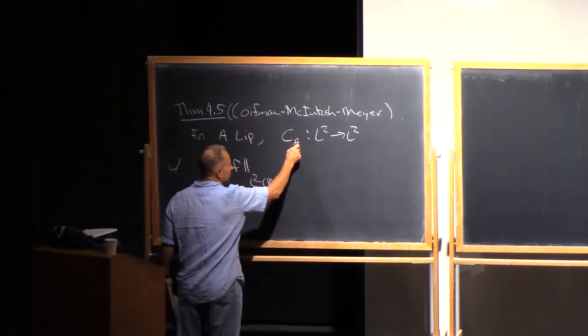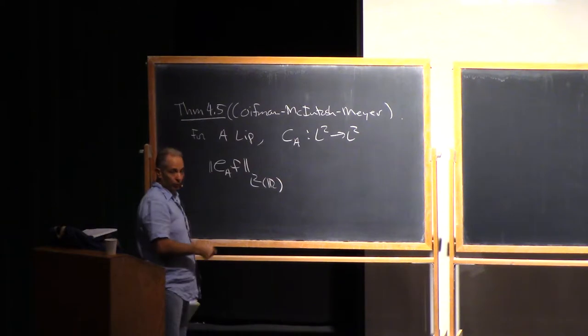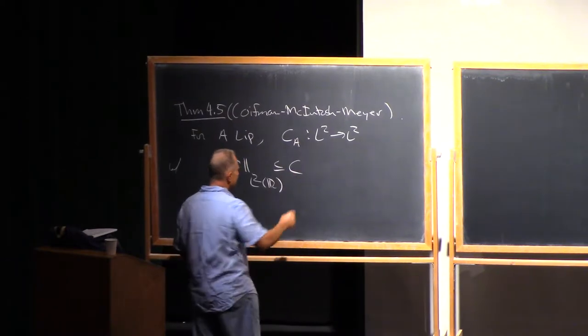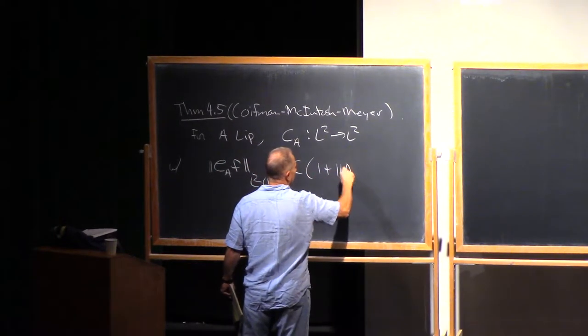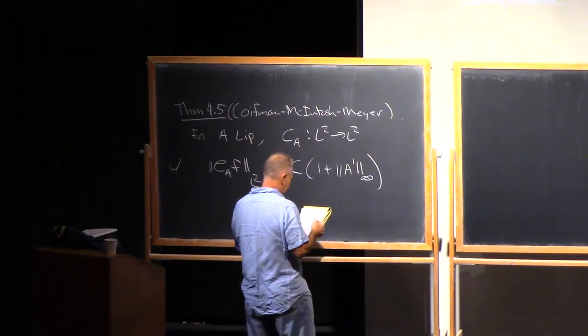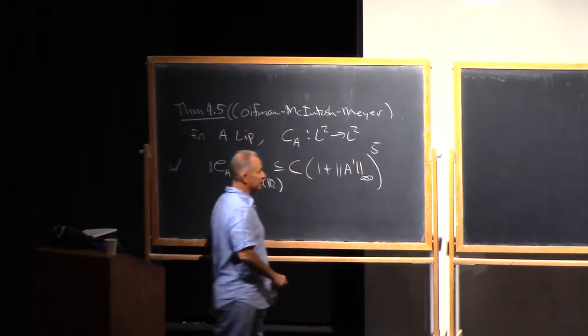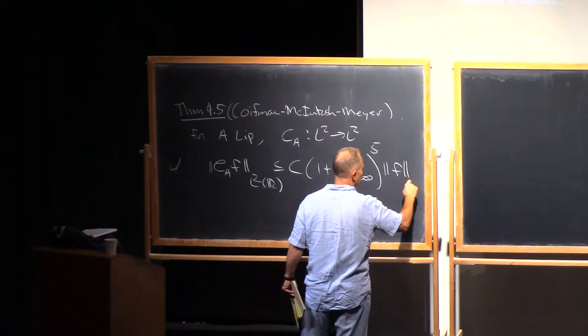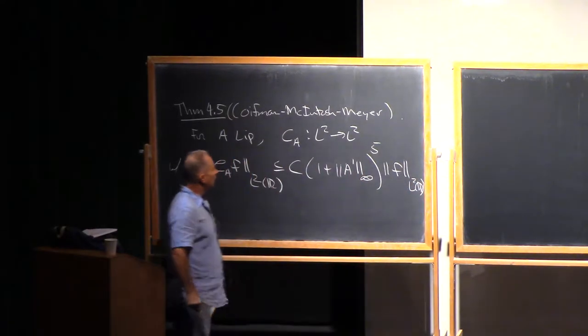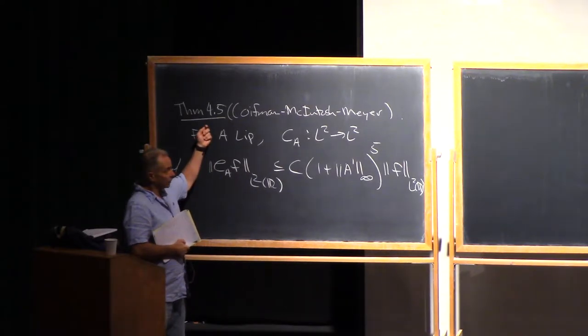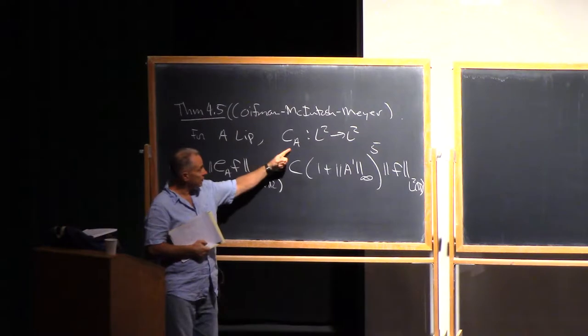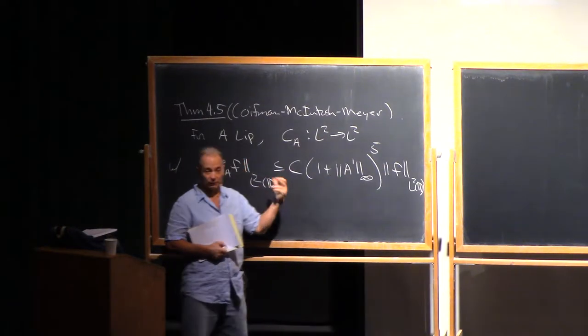This will be L2 of R, because remember, this is the one where we've written it in parametric form, using the coordinates induced by the Lipschitz graph. This will be less than some uniform constant times one plus the Lipschitz constant to the fifth power. This is not optimal, but it's plenty fine for almost all purposes.